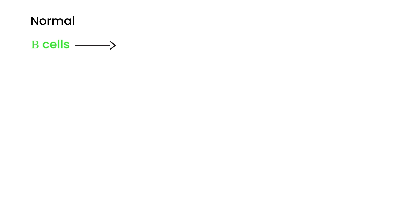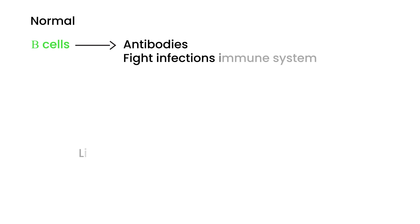Why is that important? When you have these B cells, when they're functioning normally, normal B cells in the body are very important because they produce something called antibodies. And antibodies, as most of you probably know, are very important in fighting infection. They fight infection in our body and are essentially part of our immune system. Lymphocytes live in lymph tissue.